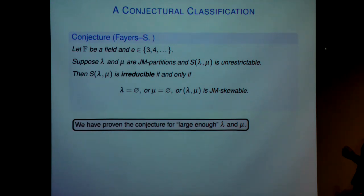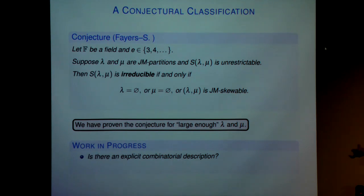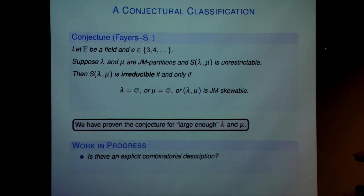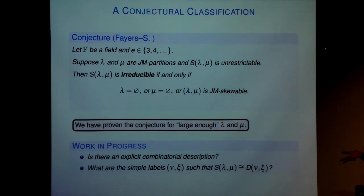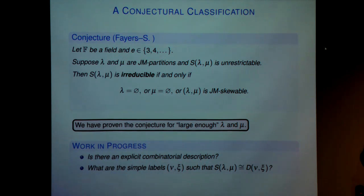This is still a conjecture up to some degenerate cases. Supposing we have large enough pairs, this is done. Once this is complete, there are further questions which would be nice to answer. One would be to have an explicit combinatorial description of these level two irreducible labels of Specht modules. And the other is: since these are irreducible, they match some simple label D_mu — what is the simple label? We have a conjecture in this case. In general this is a difficult problem because it's trying to generalize regularization to higher levels. Thank you very much.